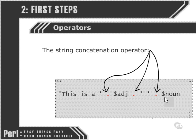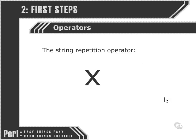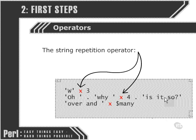The string repetition operator is similar, but instead of joining two strings together it repeats a single string the number of times we specify to the right of the operator. So 'w' followed by the string repetition operator followed by the number 3 will give us 'www'. Like the second line here, we're asking the word 'y' to be repeated four times.